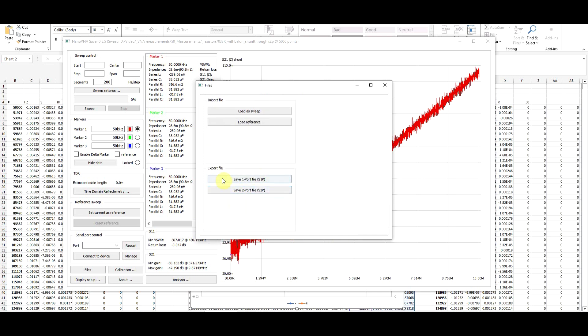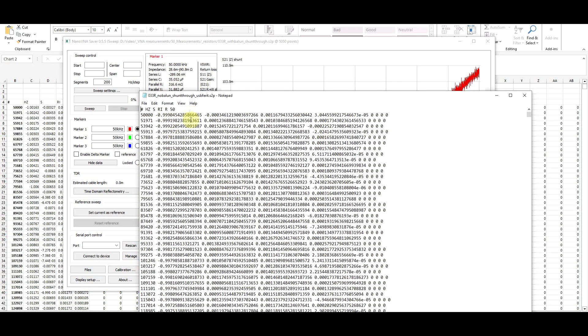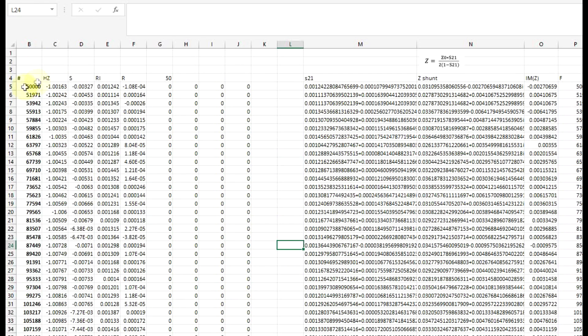For that, I first saved the touchstone file, which I can open up in notepad, and from here, copy all of these values, and place them into a spreadsheet program. Here, from all of these, I can extract the S21 parameter, so using the appropriate function, and from this, go through the various calculations. So first of all, extract the complex impedance, and then process this further,